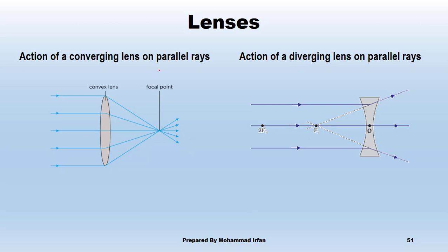Now, regarding the action of parallel rays due to convex lenses: when parallel rays pass through a converging lens, they focus at a single point. That is why they are called converging lenses. This point is called the focal point or principal focus.